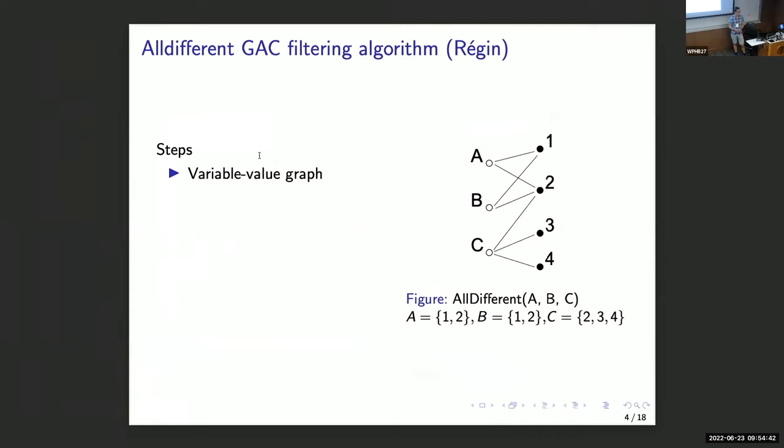Luckily there exists a very efficient sequential algorithm for global arc consistency filtering. I will briefly explain how it works because we will be parallelizing this later. Suppose we have an all different over three variables A, B, and C, and they take values one, two, three, and four. The first thing we do is consider the variable-value graph, which is the bipartite graph with variables on one side and the values on the other side. You draw an edge every time a value appears in the domain of a variable.